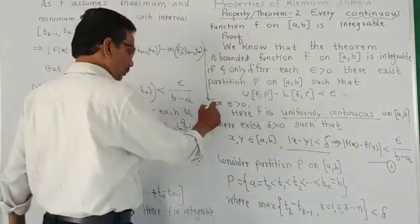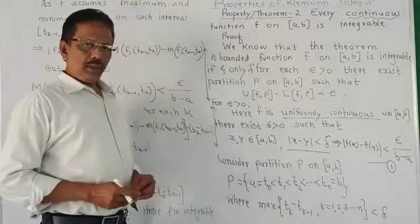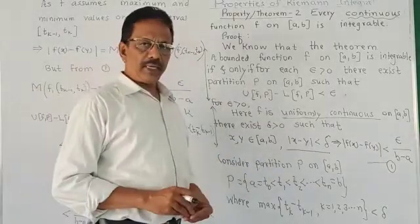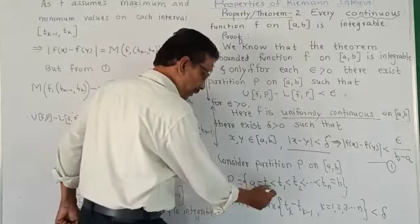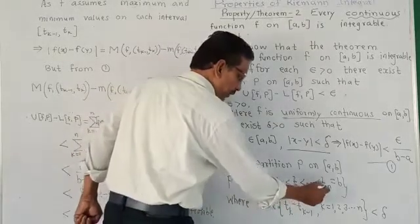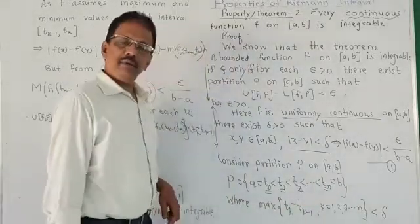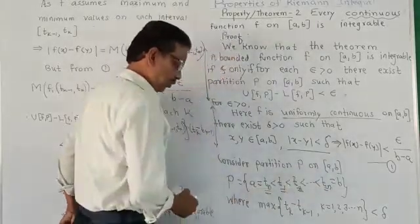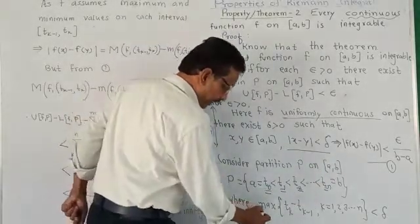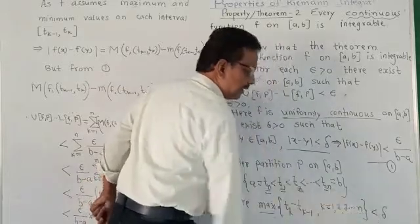This is about uniform continuity. Consider partition P as usual: P is t0 less than t1 less than tm equal to b. And maximum between them is less than delta.